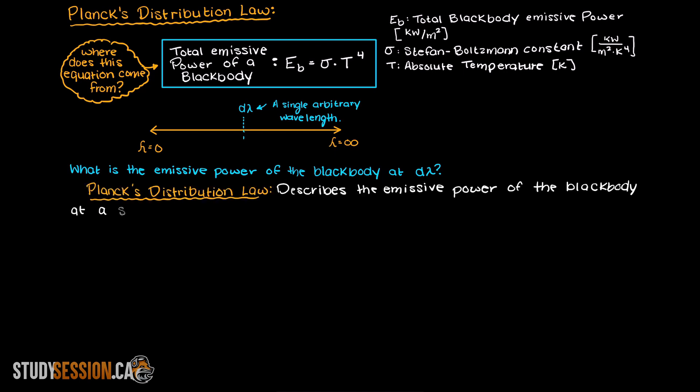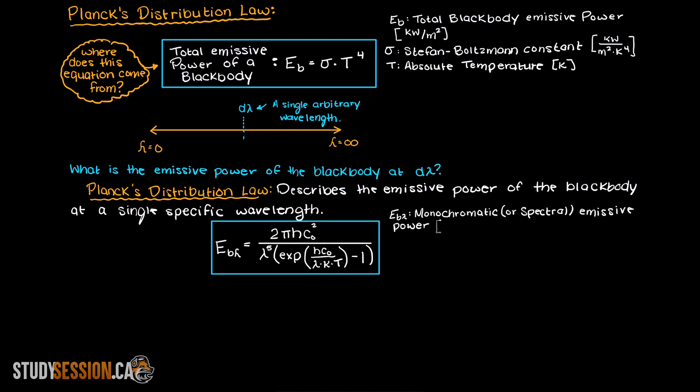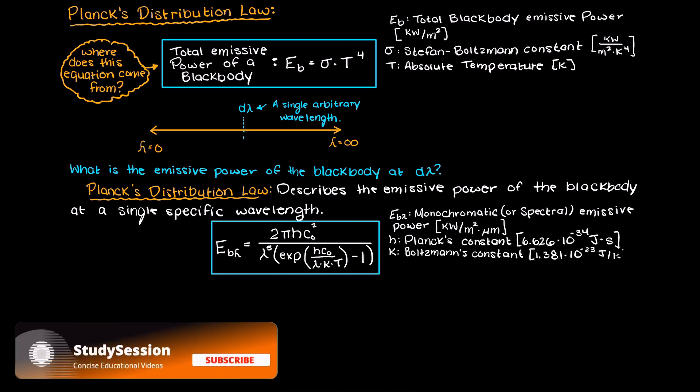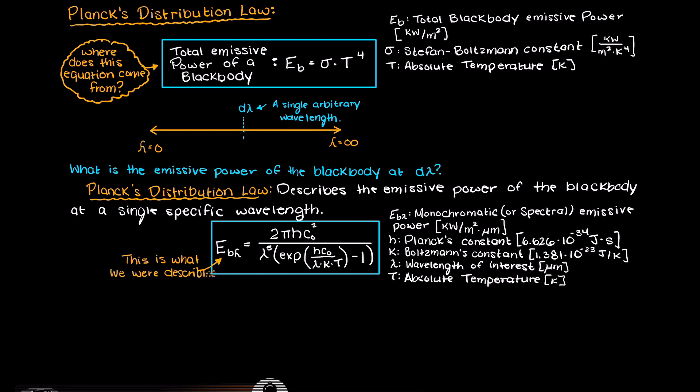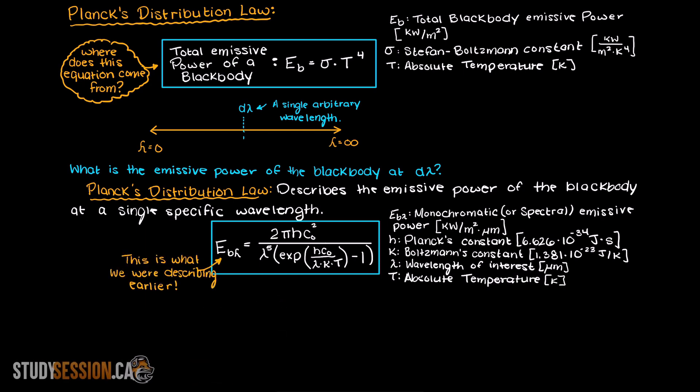Planck's distribution law describes the emissive power of a single specific wavelength. I have written out Planck's distribution law here with all of the relevant units. It is important to note that this first term here is the monochromatic emissive power of the blackbody,